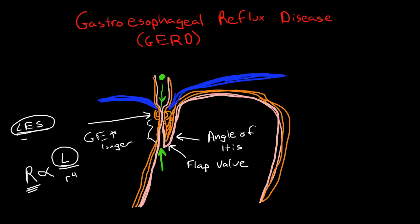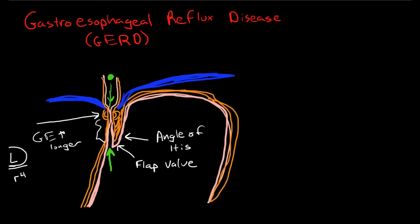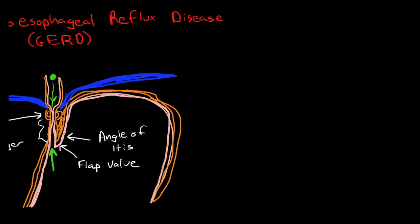So what can cause gastroesophageal reflux disease? Well, in this day and age, in the United States where obesity is becoming more and more of a problem, one of the major factors is intra-abdominal fat. We've got the esophagus coming down, and we've got a morbidly obese person that has lots and lots of fat.